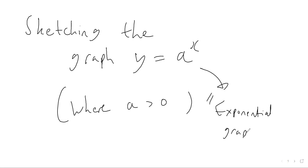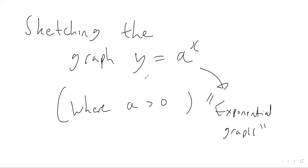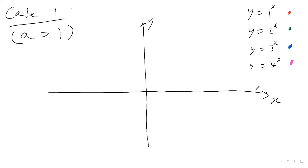We're going to look at how we would sketch graphs of this form, where you've got y equals a number to the power of x, where this number is bigger than zero. To do these kinds of graphs, we've got two cases: the case where a is bigger than one, and the case where a is between zero and one. Let's think about the case where a is bigger than one.